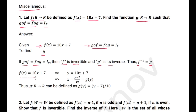So, when f(x) = 10x + 7, we can take f(x) = y and on rearranging, we will get x = (y − 7)/10. So this is your g(y), and this is the required function g from R to R.